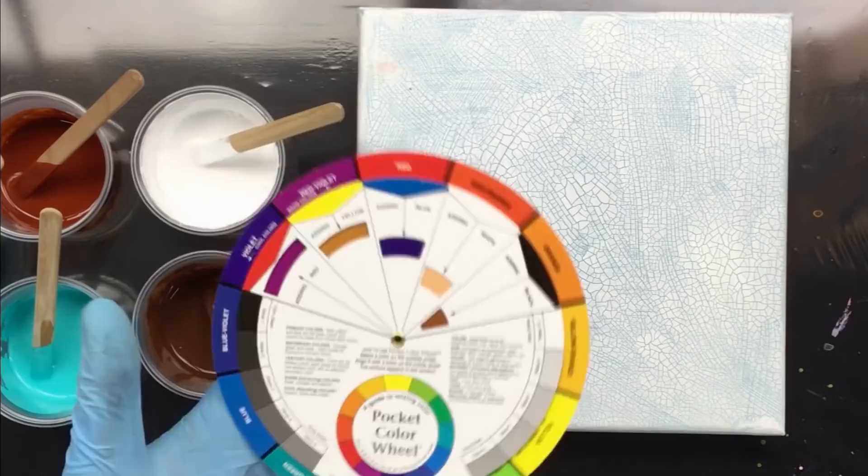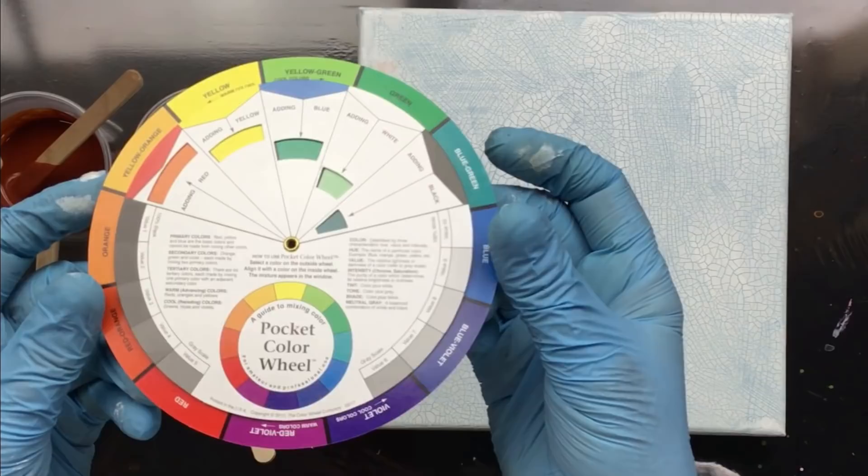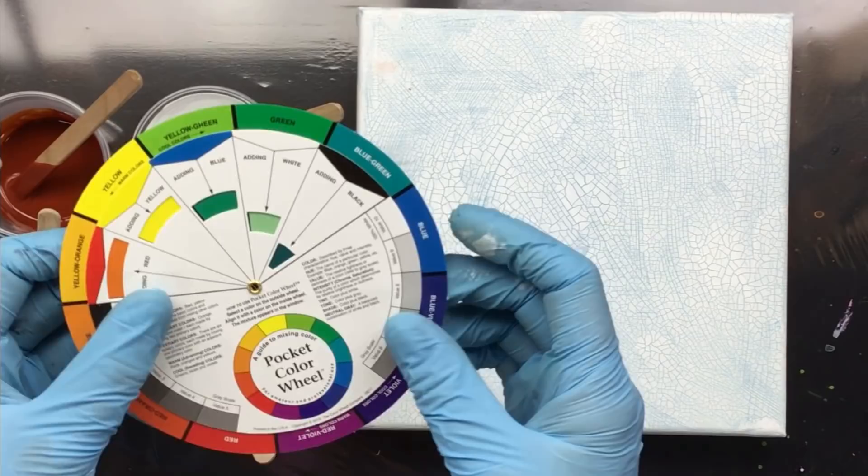Another thing I bought—you can find this online, but I wanted to show you with the wheel what that does. This is called a color wheel, and it helps you determine what you're going to be getting.